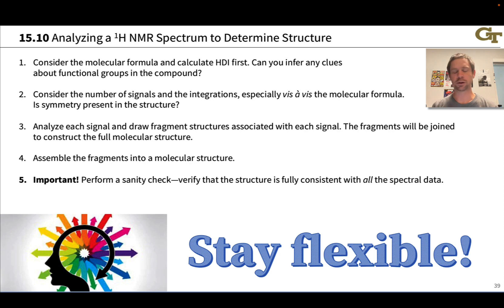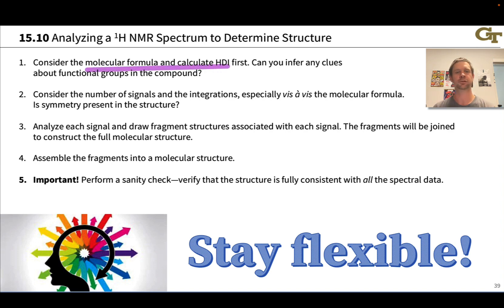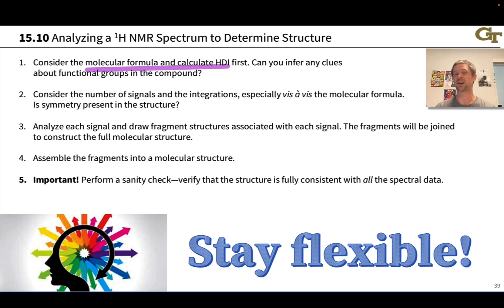The first thing you should do when analyzing a proton NMR spectrum is look at the molecular formula and calculate HDI. This will generally be provided because it comes from elemental analysis, which is another analytical technique that can tell you the molecular formula. We can potentially get some clues about functional groups from the HDI — for example, with a very low number of hydrogens and a lot of unsaturation, aromatic rings are often involved.